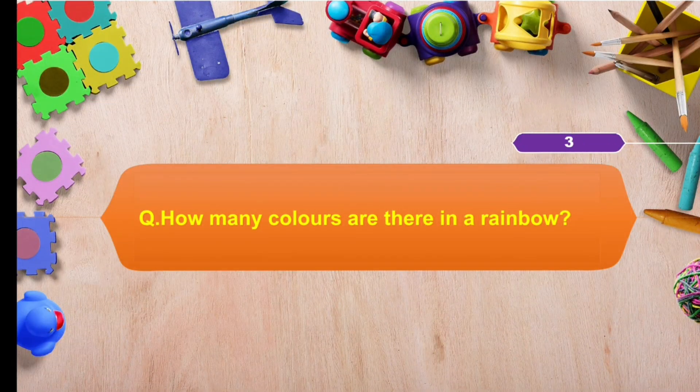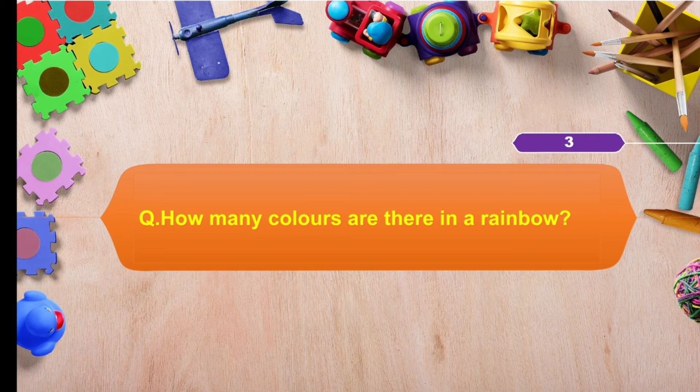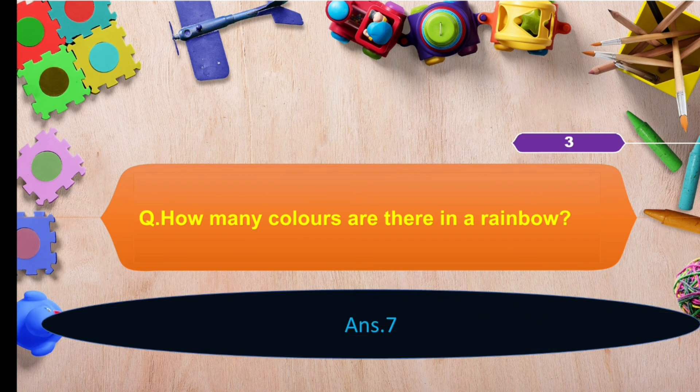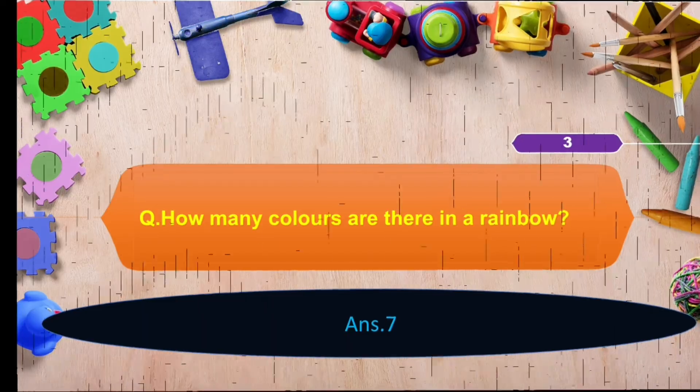How many colors are there in a rainbow? And the answer is seven. Next question.